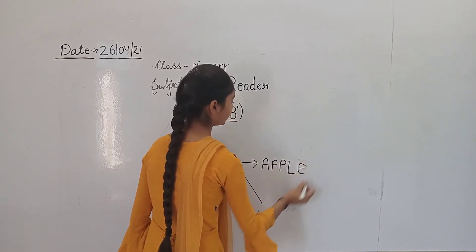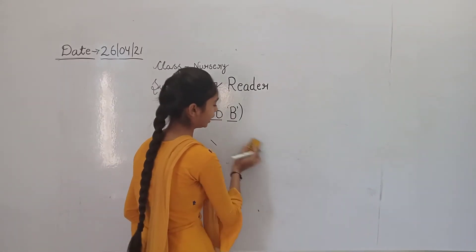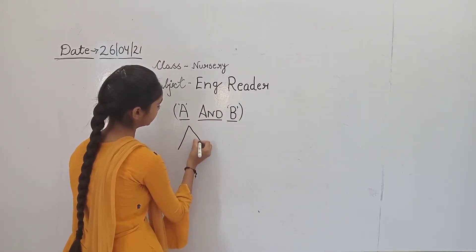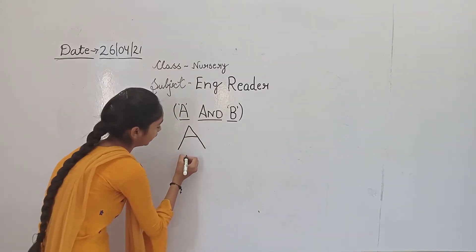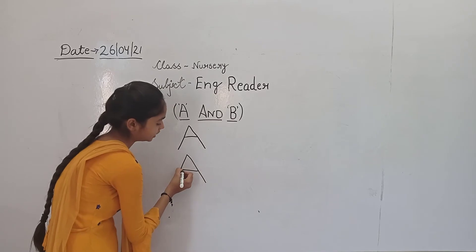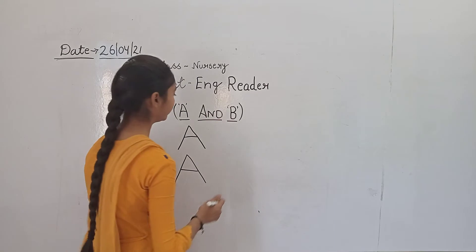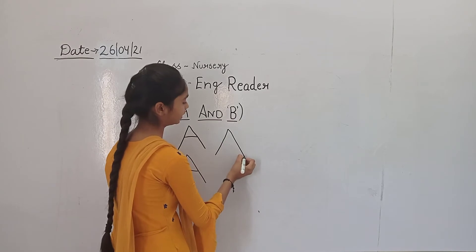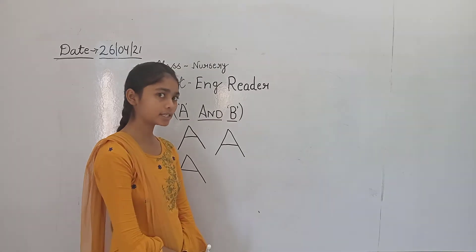A for apple. Apple means safe. A for apple. This is our sleeping line, this is our sleeping line. Once again — what is A for? A for apple. Apple means safe.